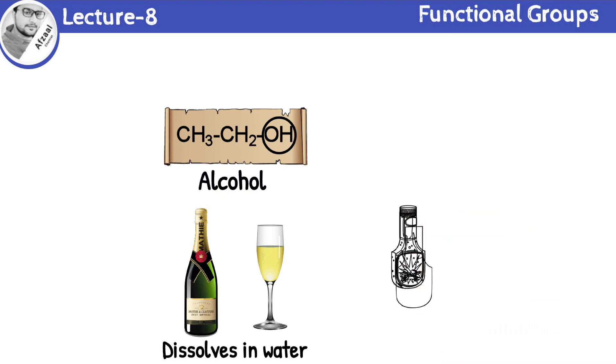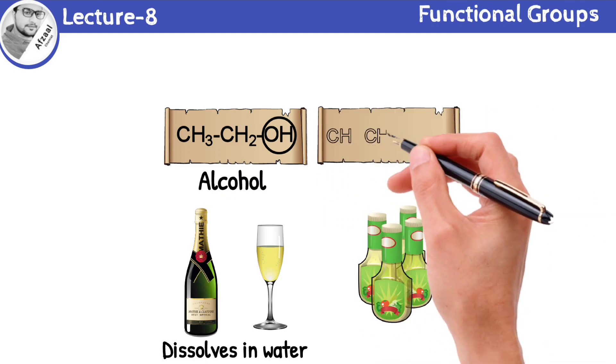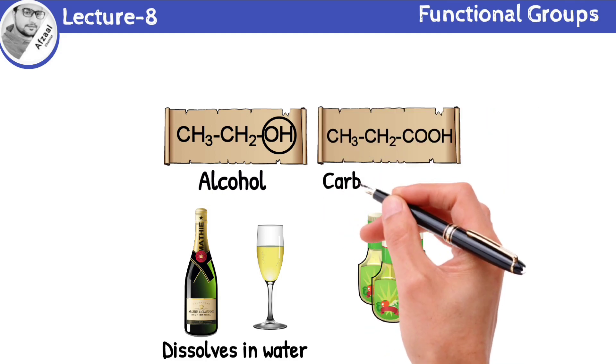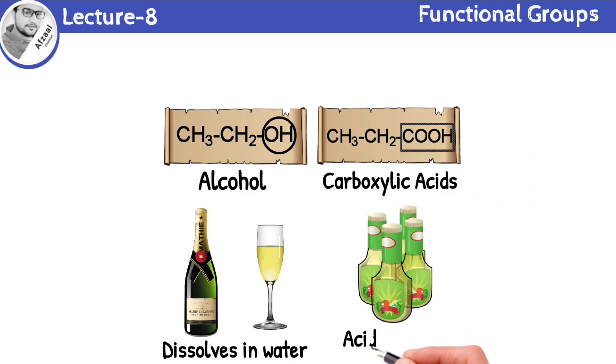You might be surprised to know that vinegar belongs to class of compounds known as carboxylic acids. It contains a special group of atoms called carboxylic group which gives it its unique acidic nature. This property differentiates carboxylic acids from other organic compounds.